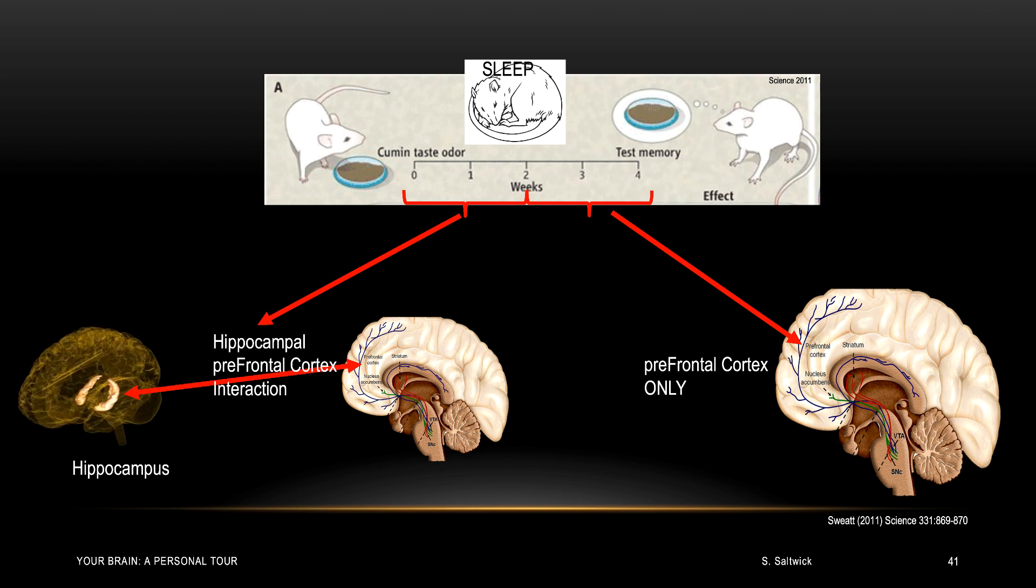Before we finish this section, however, I want to look in more detail at the memory as it synchronizes between the hippocampus and the frontal cortex, because it's very important to understand that not only do memories move about, they might be transformed.